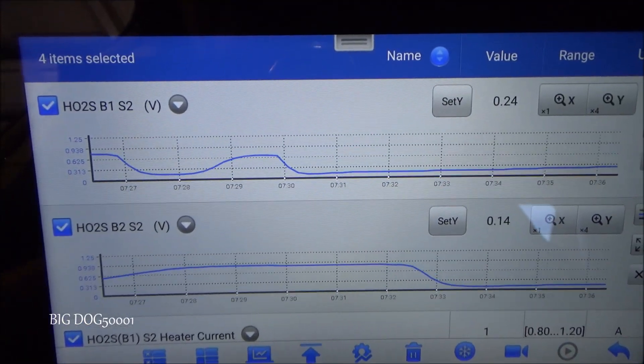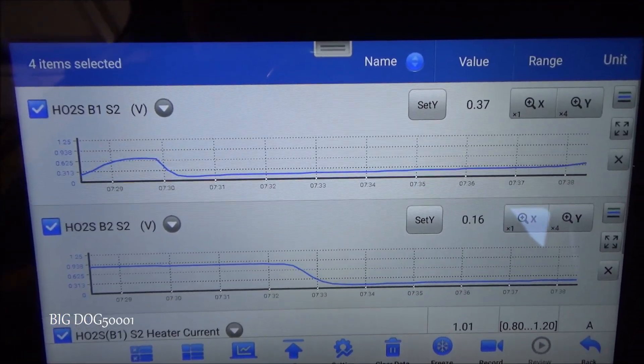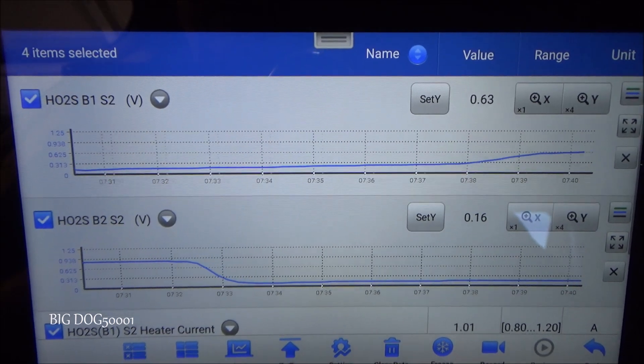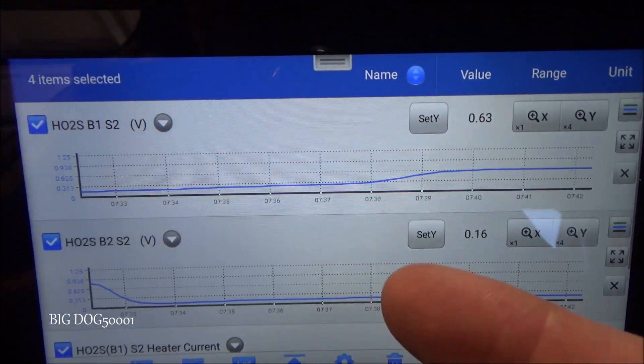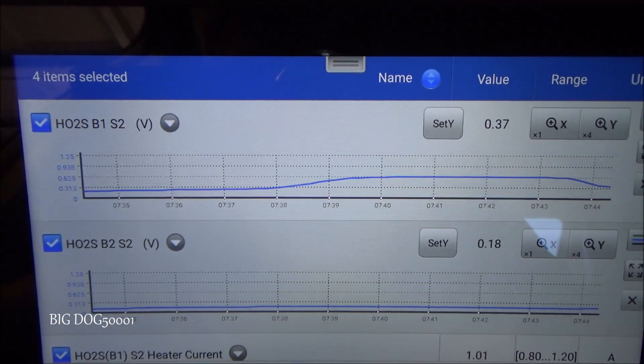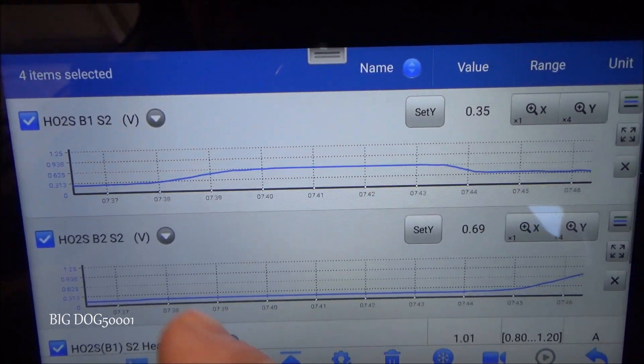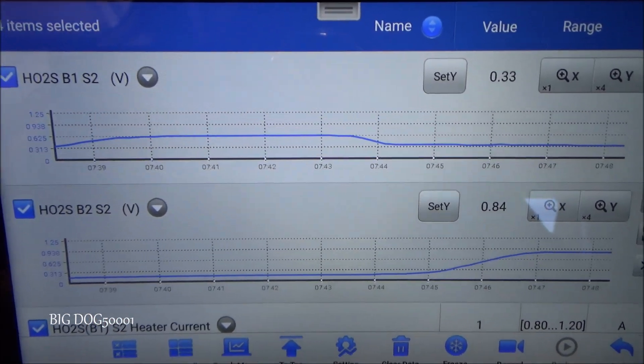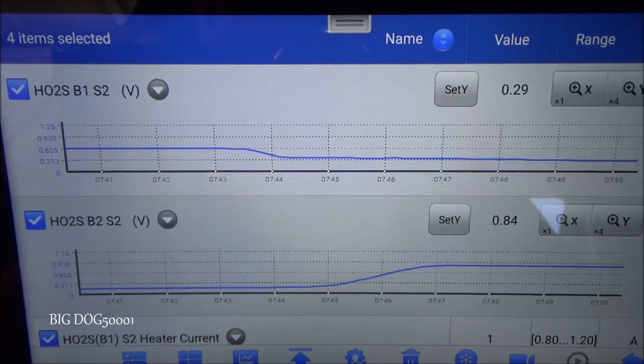This is not a foolproof way of diagnosing oxygen sensors. Because we never know what the computer is doing to control these things. But based on what I'm seeing so far it just looks like we have a sluggish oxygen sensor on this Bank 2 sensor 2. And so I think I'm going to recommend that we go ahead and replace it.